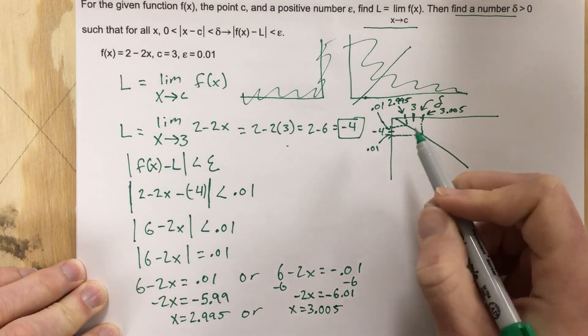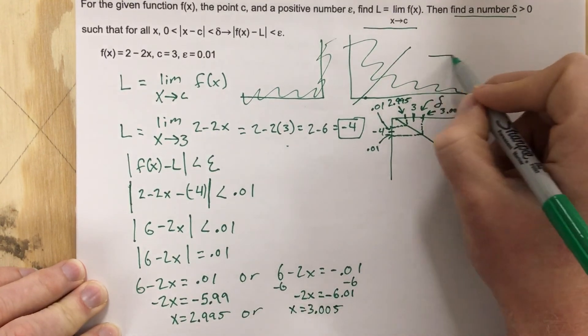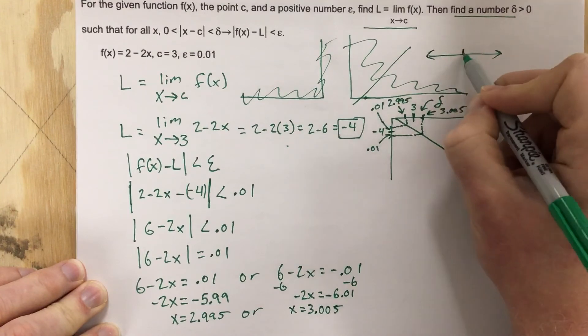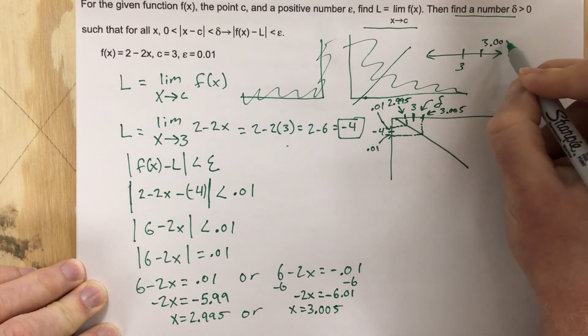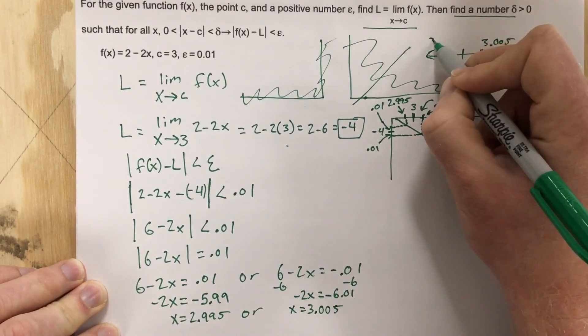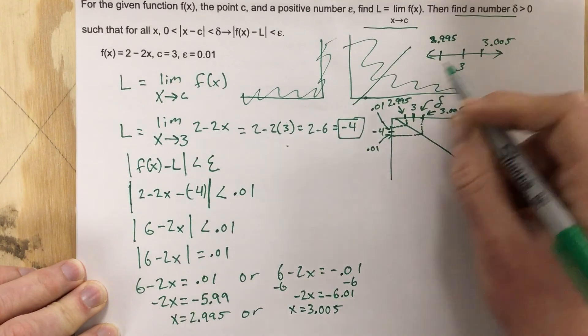Now, the solutions are going to lie between them, because when we check 3, so if I drew a number line and put 3, 3.005 and 2.995, I take 3, plug it in.